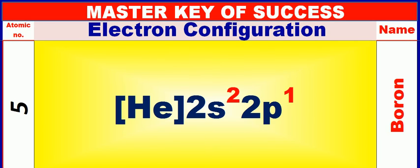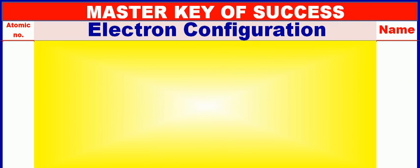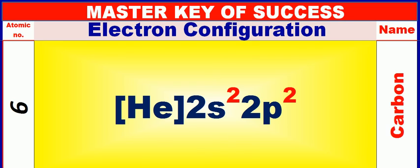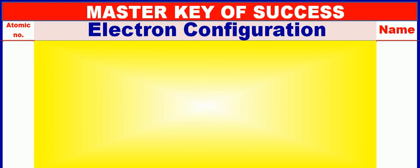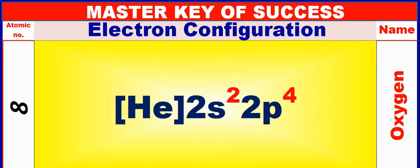Atomic number is 5 and name of atom is Barron. Atomic number is 6 and name of atom is Carbon. Atomic number is 7 and name of atom is Nitrogen. Atomic number is 8 and name of atom is Oxygen.